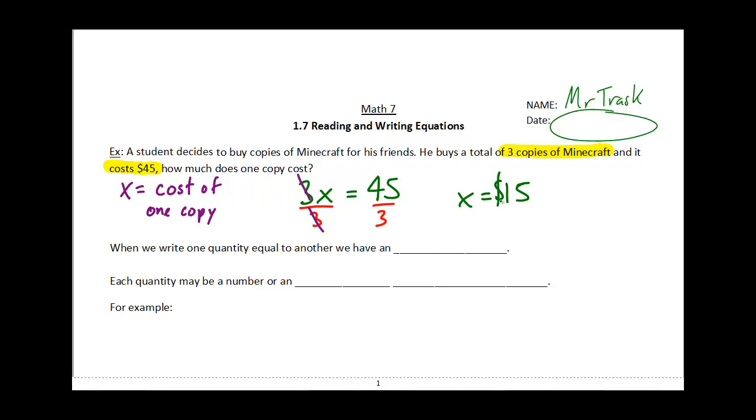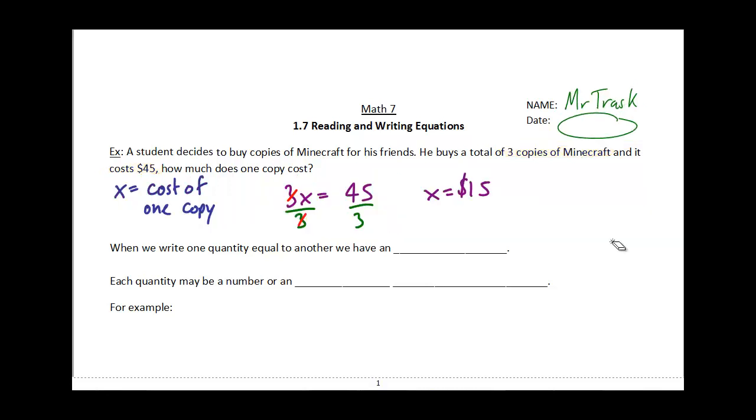You're not going to be solving equations on this test, but that's a preview of how we would do it. So when we have one quantity equal to another, we have an equation, and each quantity within that equation may be a number or its own algebraic expression.